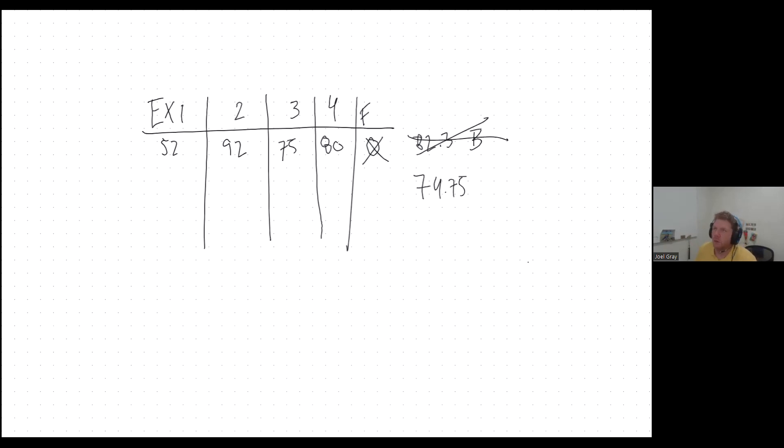So if you're looking at this and you're thinking, well, what do I need to get on the final exam? Then what you need to do is you need to say, well, an A is 90% of 400. Therefore, you need to get a total of 360 points.